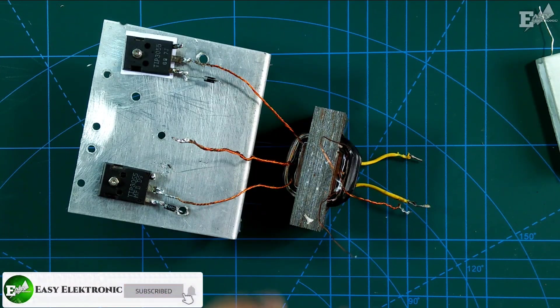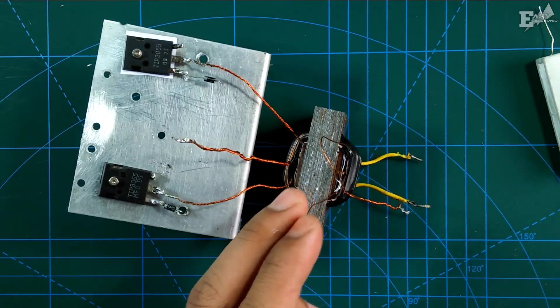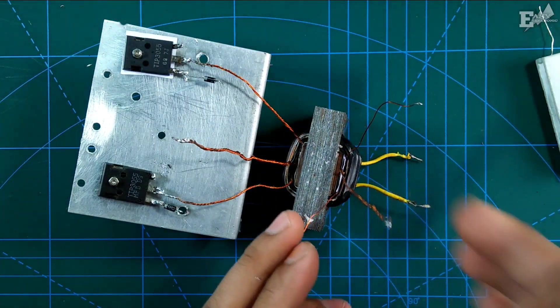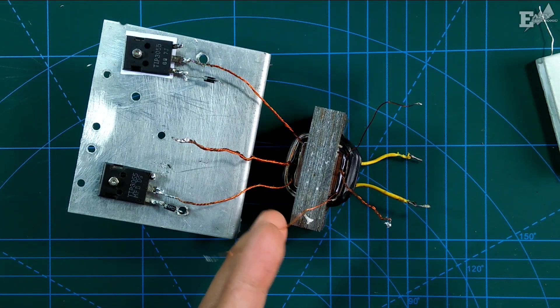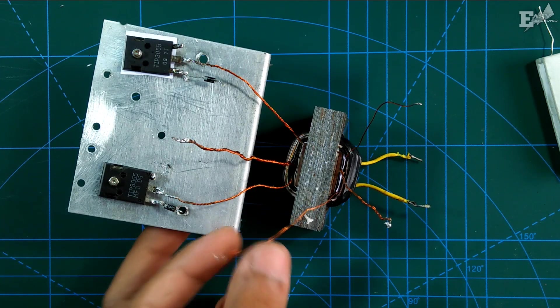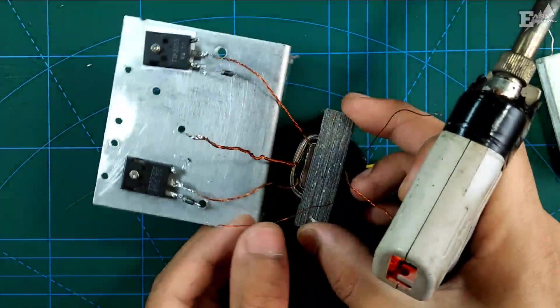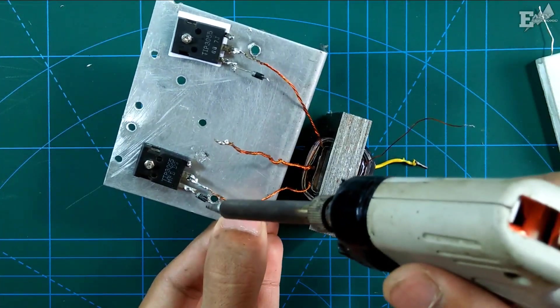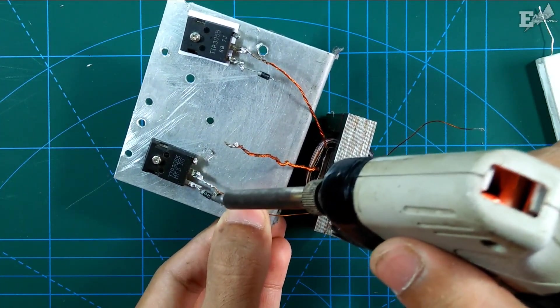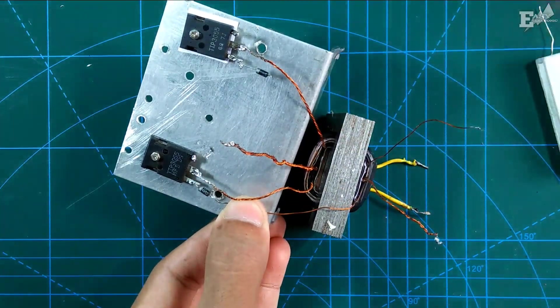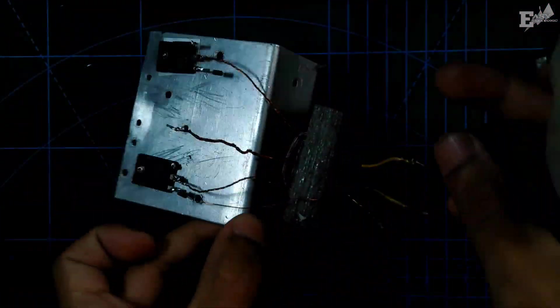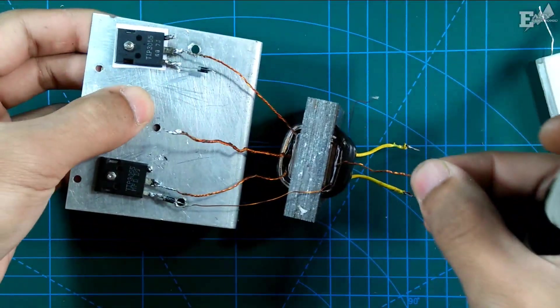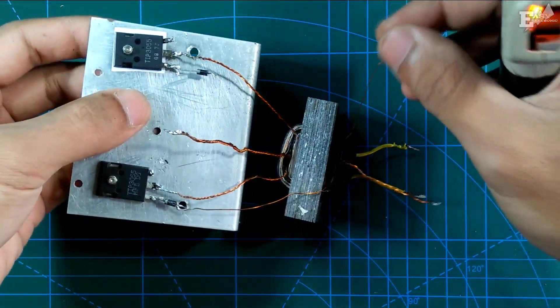This is it. Now we just need to connect the feedback winding to the transistor. This first feedback winding goes into the diode, the negative part, the diode pin. Goes in here. Then the other side is also the same, going into the negative pin of the diode.